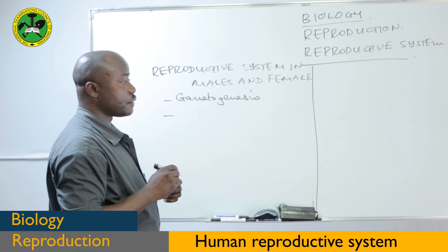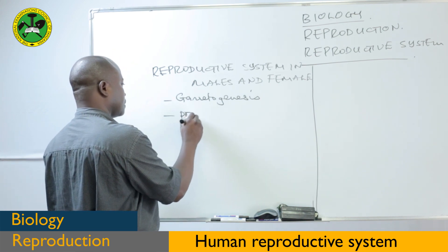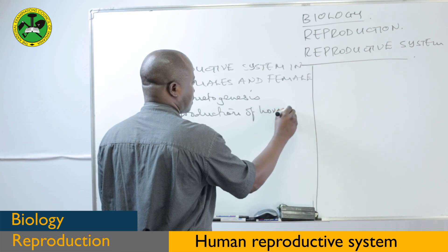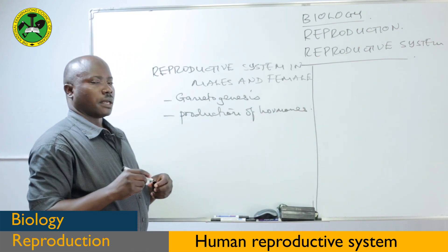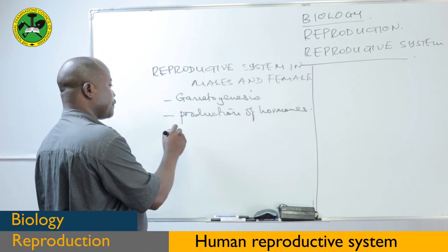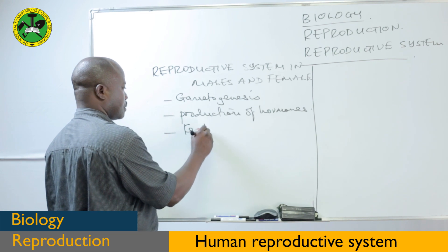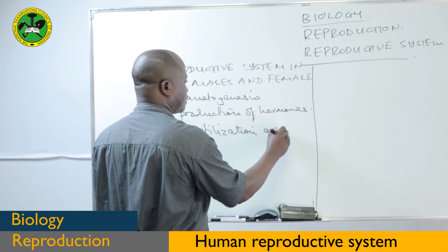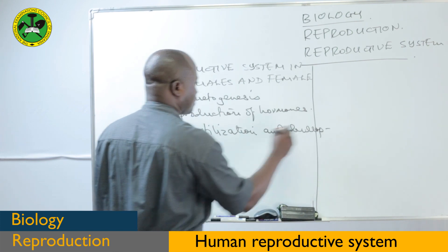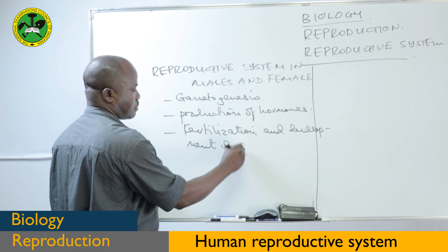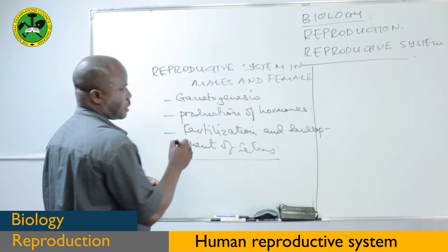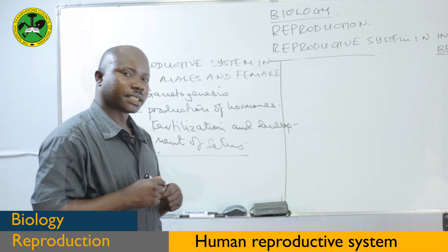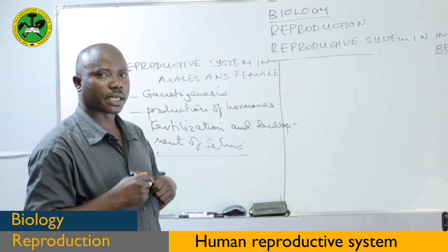...they also perform production of hormones, and also in the female body, the site for fertilization. These are general functions which the reproductive systems perform. To start with, let us see the structure of the female reproductive system.